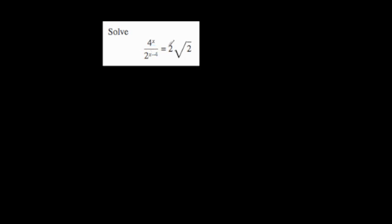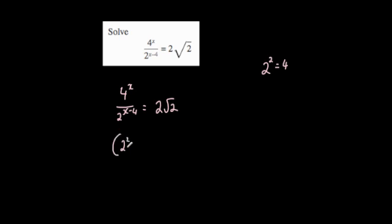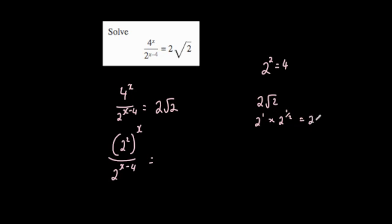Let's look at another example: solve 4 to the power of x divided by 2 to the power of x minus 4, equals 2 root 2. Notice we have 2 to the power of something, 2 root 2, and 4. Since 4 equals 2 squared, we rewrite the 4 as 2 squared in brackets to the power of x. On the right side, 2 root 2 is 2 to the power of 1 times 2 to the power of a half, which equals 2 to the power of 1 and a half.